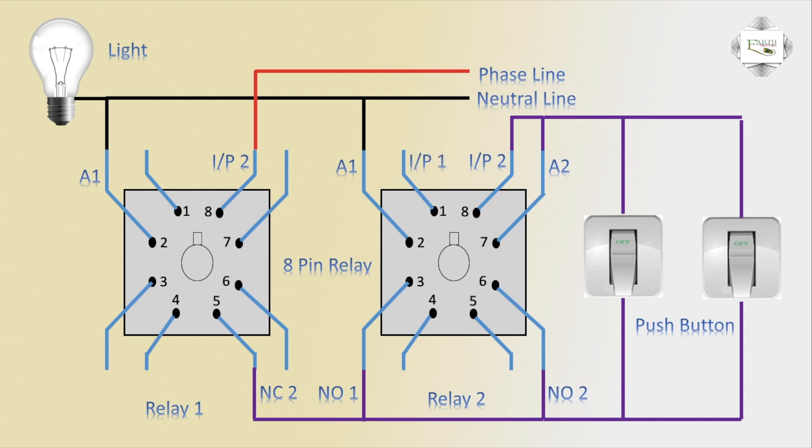Input 1 connection, relay pin number 7, relay 1, A2 means coil. 2-number terminal connection, or outgoing light.